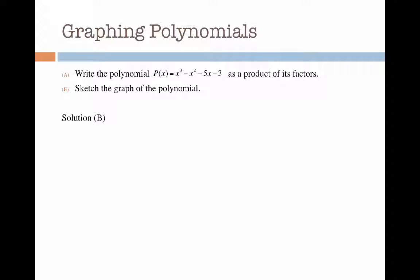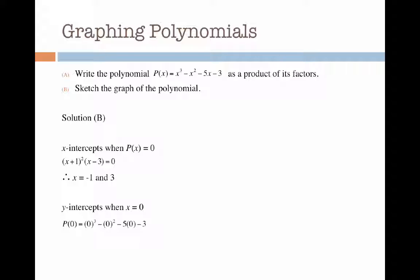Now it's time to sketch the graph of the polynomial. To do this I need to know what my x-intercepts are — that happens when p of x equals 0. Since I wrote p of x as a product of its factors, it's easy to find the x-intercepts of minus 1 and 3. Because minus 1 is a double root, we're going to see something interesting happen when x equals minus 1. Next, the y-intercept when x equals 0: p of 0 gives me an answer of minus 3.